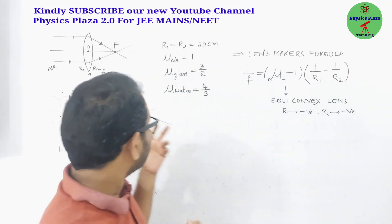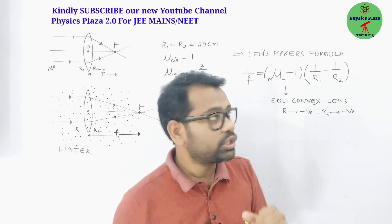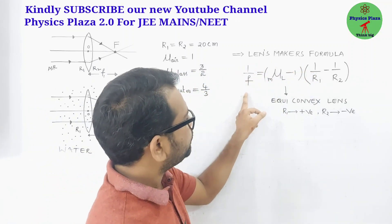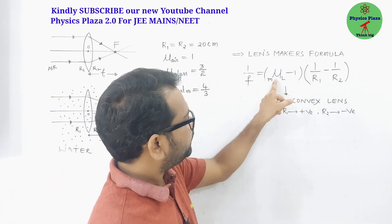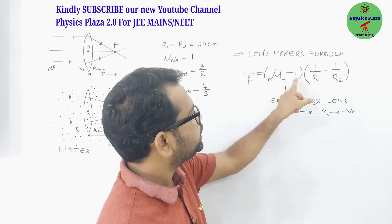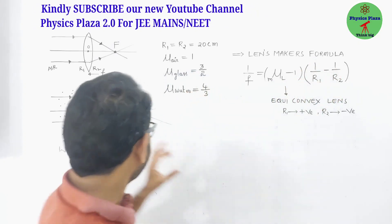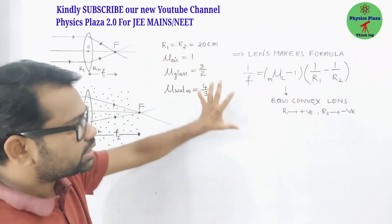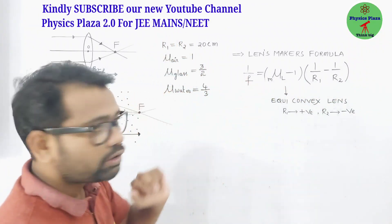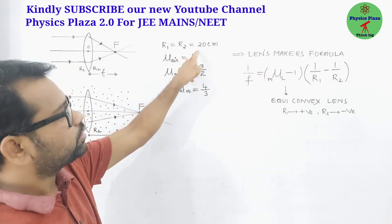We can understand this with the help of the lens maker's formula. The general lens maker's formula is: 1/f = (refractive index of lens with respect to medium − 1) × (1/R1 − 1/R2). For an equi-convex lens, the radii of curvature are equal — here they are 20 centimeters.